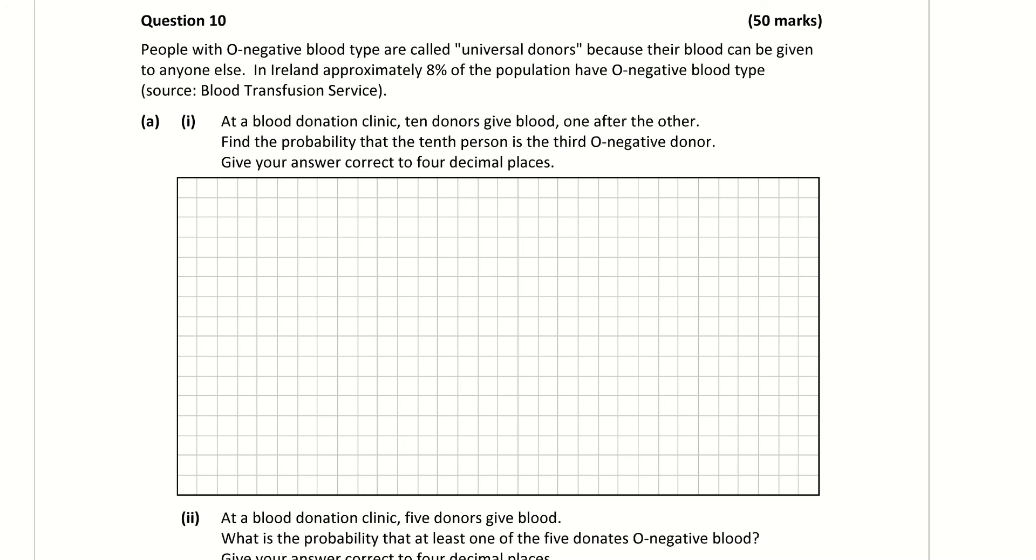So question 10a part 1. The first part tells us that 8% of the population have O negative blood type. Part 1 says that at a blood donation clinic, 10 donors are giving blood. Find the probability that the 10th person is the third O negative donor.